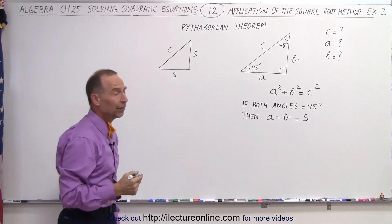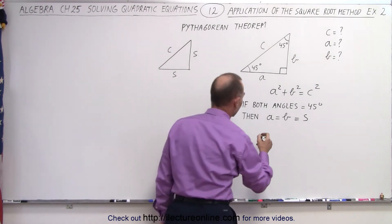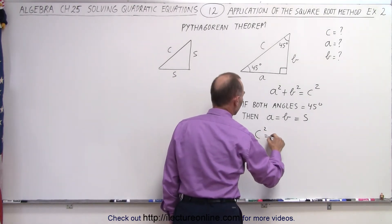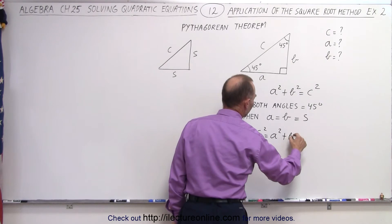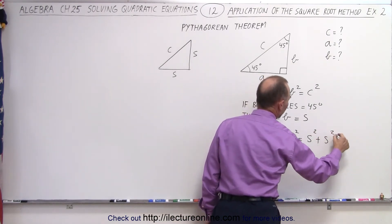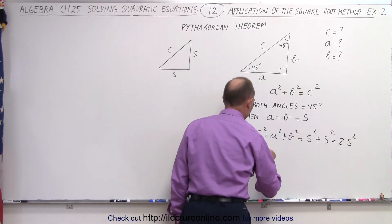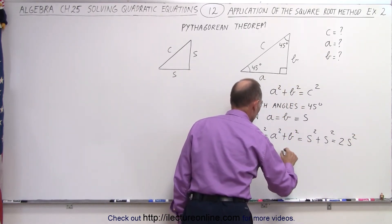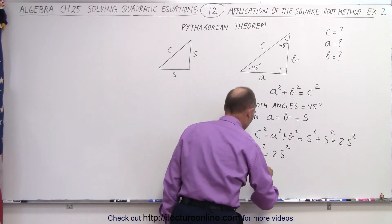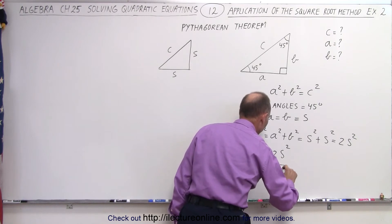That means that if we're going to solve for C, for A, and for B, we can do the following. We can say that C squared is equal to A squared plus B squared, which is equal to S squared plus S squared, which is equal to 2S squared. Therefore, C squared equals 2S squared. Taking the square root of both sides, we can say that C is equal to the square root of 2S squared.